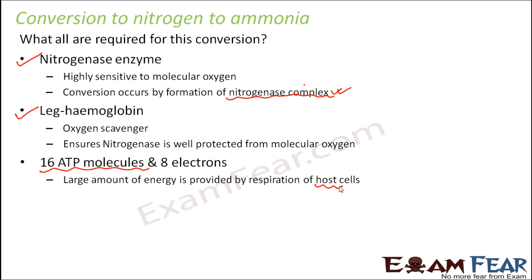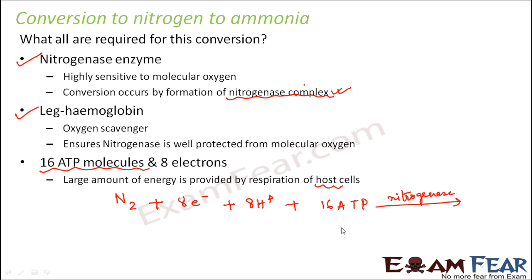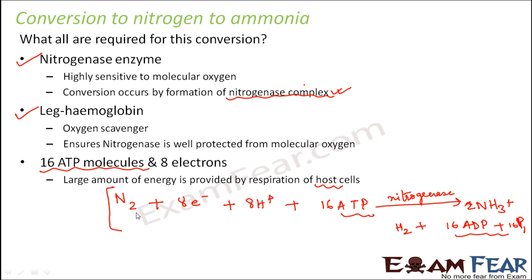Overall, the reaction is as follows: nitrogen combines with 8 electrons and 16 ATP molecules in the presence of the enzyme nitrogenase, and forms 2 molecules of ammonia plus hydrogen plus ADP. The ADP is the result of ATP — adenosine triphosphate — being converted to adenosine diphosphate. So this is the overall reaction of conversion of nitrogen into ammonia, starting with nitrogen and ending with ammonia in a usable form.